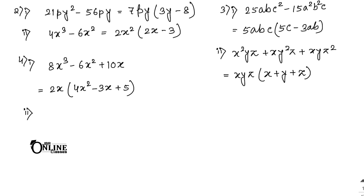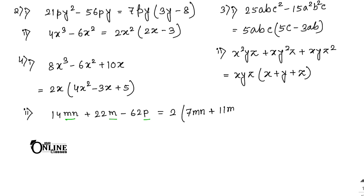Sum number 4.2: 14mn + 22m - 62p. The HCF of 14, 22, and 62 is 2. However, since the first term has m, the second has m, but the third has p only, there are no common variable terms. So only 2 is the common factor. The answer is 2(7mn + 11m - 31p).